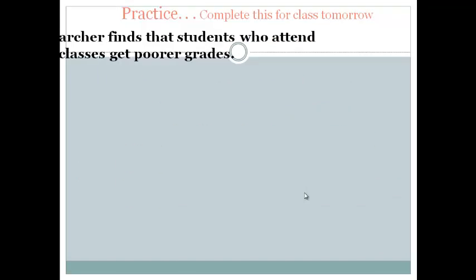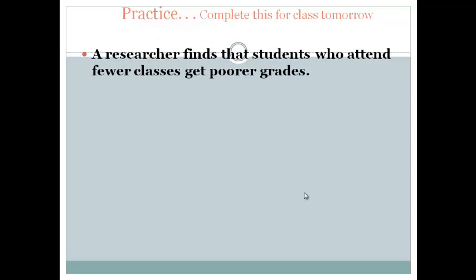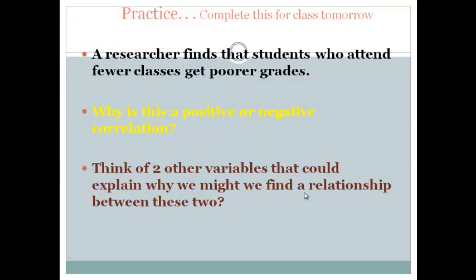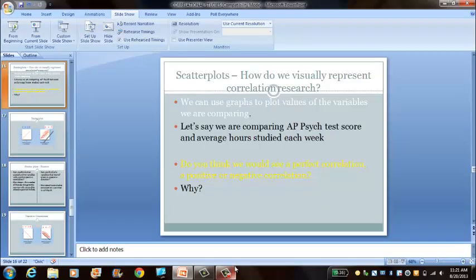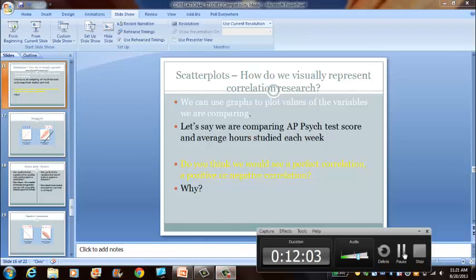So you want to complete this for class tomorrow. A researcher finds that students who attend fewer classes get poorer grades. Why is this a positive or negative correlation? Can you think of two other variables that might explain why we find this relationship? Why can't we conclude causation? So we're going to move on to scatter plots next. So you should take a look at the end of your notes. There's some practice questions in there that we'll go over in class. And we'll actually talk about designing a correlational study in class. So good luck, and don't forget to be kind and rewind.